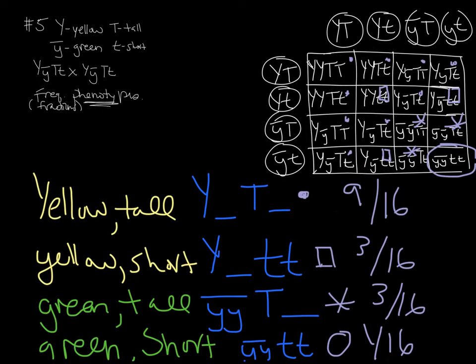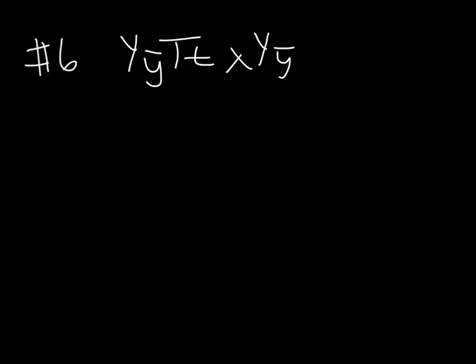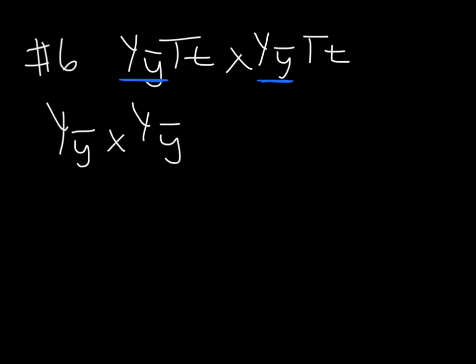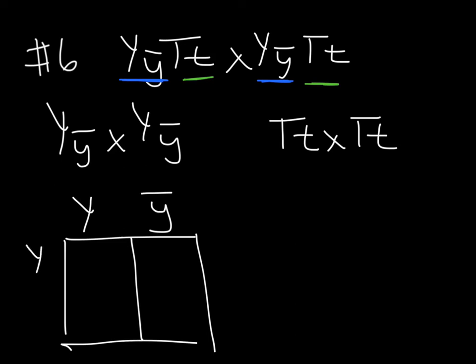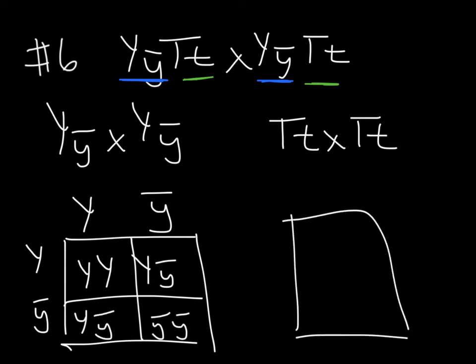You can work a dihybrid cross that way, but there's a much faster method. This only works when genes are not linked — meaning the Y gene does its own thing and the T gene does its own thing because they're on different chromosomes. Instead of a 16-square Punnett square, we just work two separate Punnett squares: cross just the Y's as a monohybrid cross, and cross just the T's as another monohybrid cross.